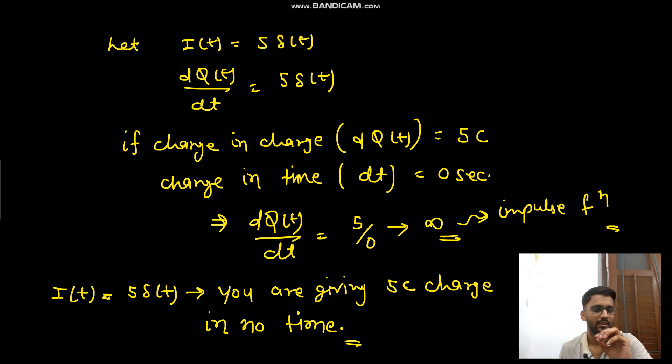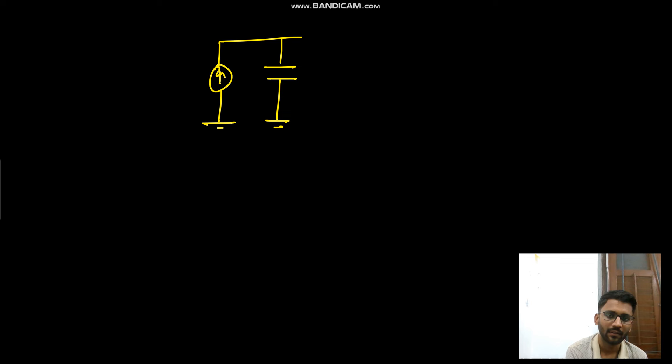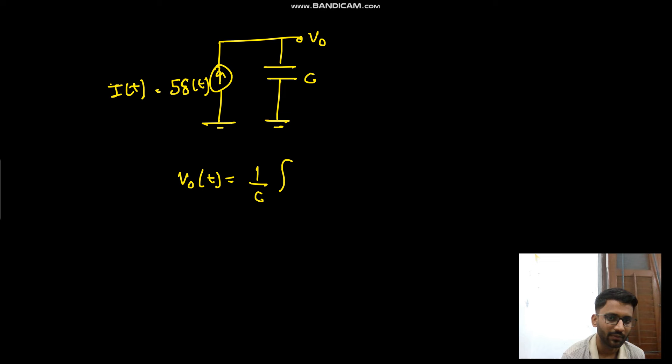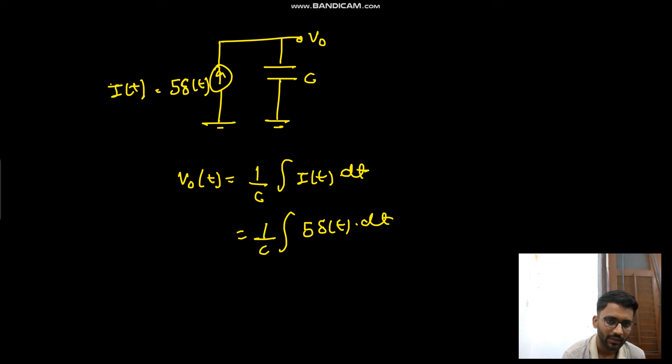Now consider this circuit: we have a capacitor, a v-node, capacitance C, and a 5δ(t) current source. You need to draw the waveform of v_node(t). Using the capacitor voltage equation: v_node(t) = (1/C) ∫ 5δ(t) dt = 5/C · u(t).